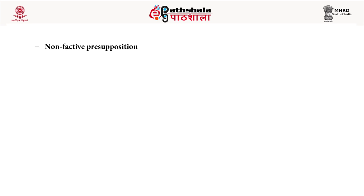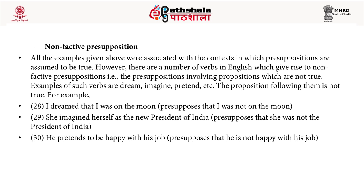Non-factive presupposition: all the examples given above were associated with contexts in which presuppositions are assumed to be true. However, there are a number of verbs in English which give rise to non-factive presuppositions — that is, the proposition following them is not true. For example: 'I dreamed that I was on the moon' presupposes that I was not on the moon. 'She imagined herself as the new president of India' presupposes that she was not the president of India. 'He pretends to be happy with his job' presupposes that he is not happy with his job.